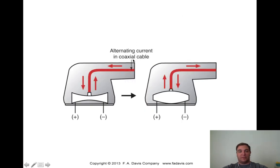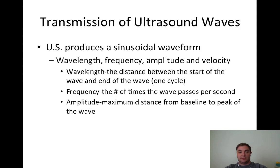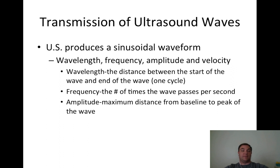The alternating current coming into the coaxial cable causes the crystal to expand and contract. Ultrasound produces a sinusoidal waveform with frequency, amplitude, and velocity. Wavelength is the distance between the start and end of one wave cycle. Frequency is the number of times the wave passes per second. Amplitude is the distance from baseline to the peak of the wave.